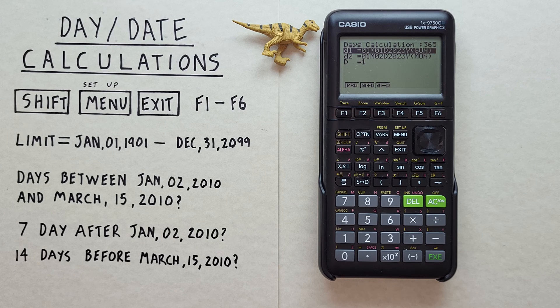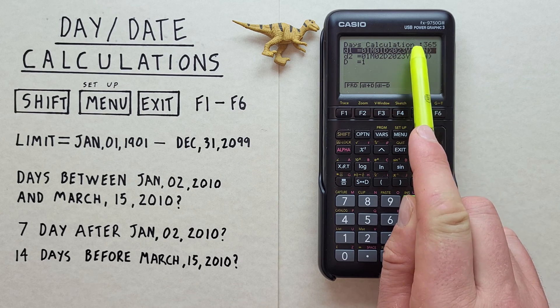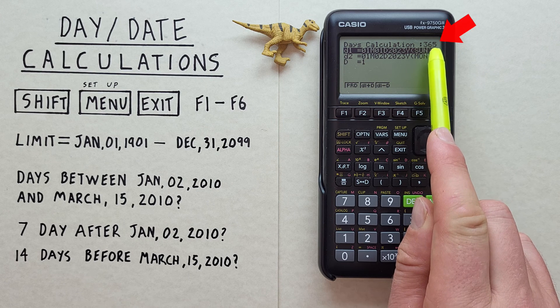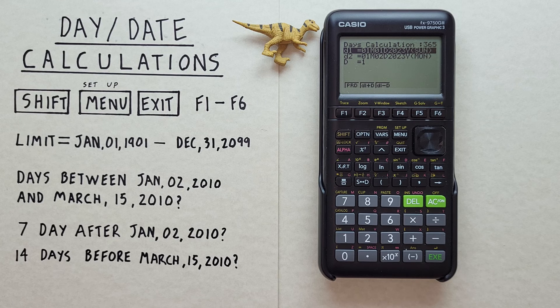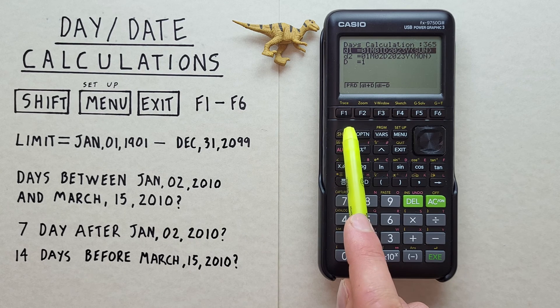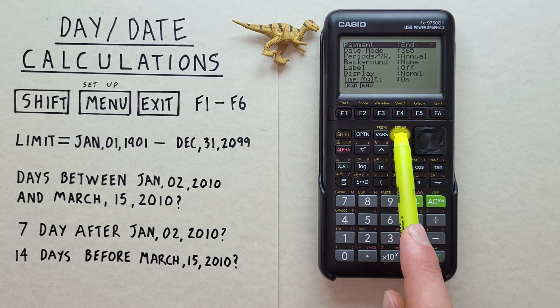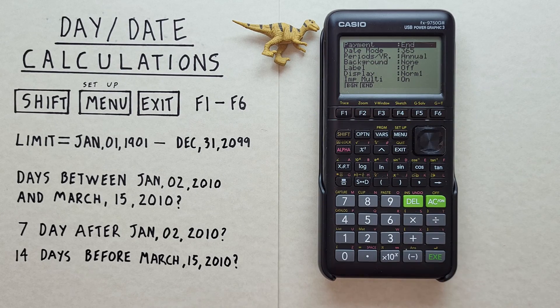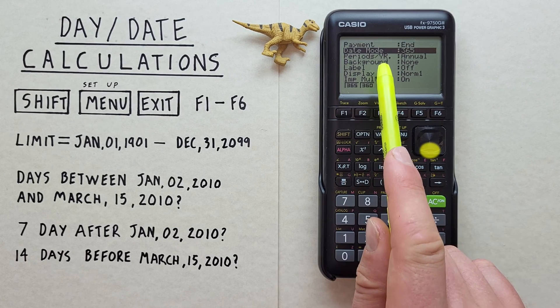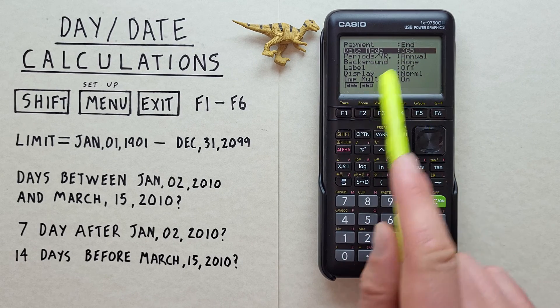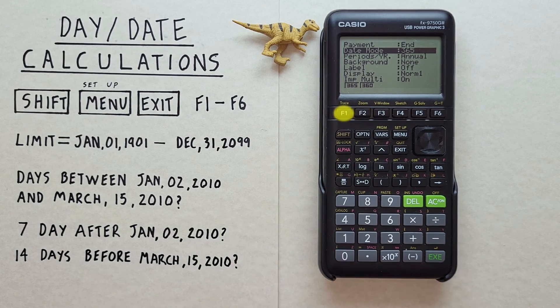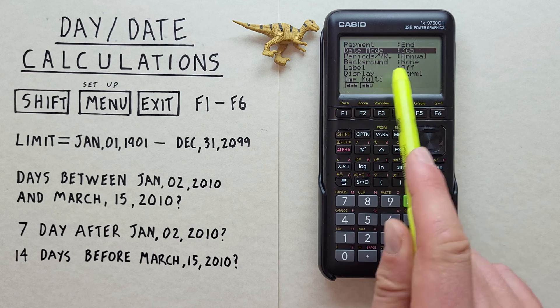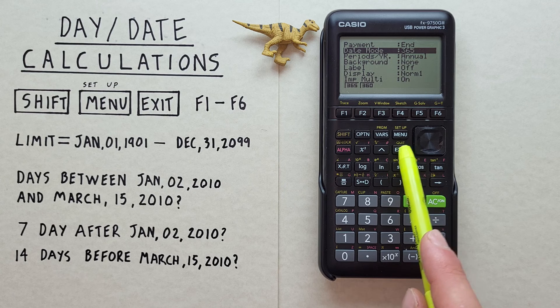Also we can use either 365 or 360 day years. You can see right now I'm set to 365 day years because it says 365 at the top there. If we wanted to change that to 360 day year we would do that by pressing the shift and then the menu key bringing us to this menu. And then if we scroll down to date mode we see we can change between 365 and 360 day years. We'll keep it at 365 day years for this example. And then we can exit out of that with the exit key.